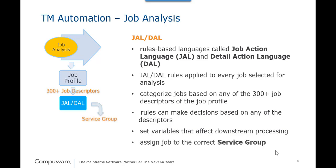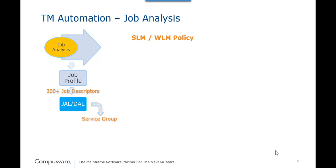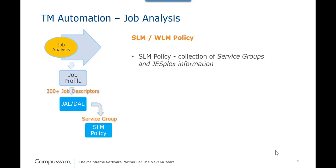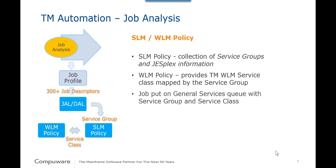Lastly, for SLM-managed jobs, JAL assigns the job's service group. A collection of these service groups is housed in the SLM policy, where they map a job to the appropriate Throughput Manager WLM service class and service goals for that job. At the end of analysis for an SLM job, the appropriate WLM service class identified by the service group is requested from WLM and the job is placed on the general services queue with the service class and the service group.